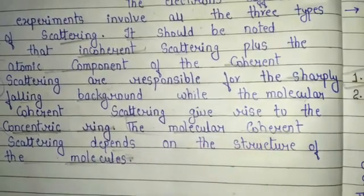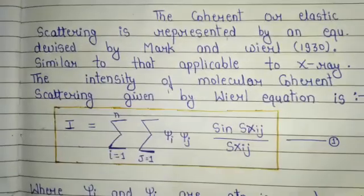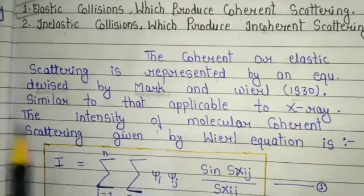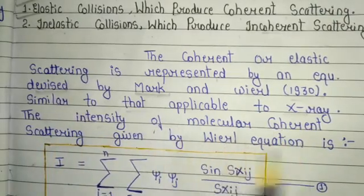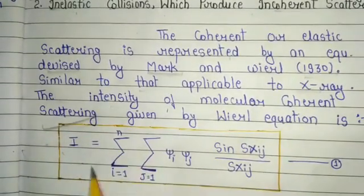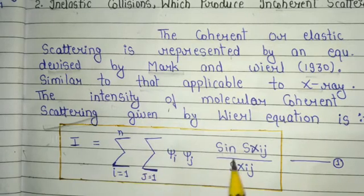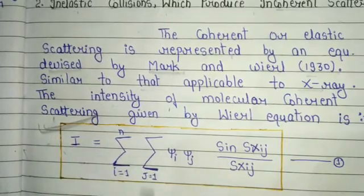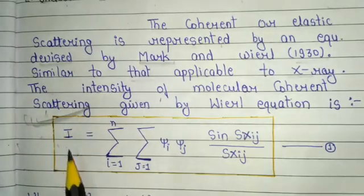Now the important part of the video is the Virial equation. The coherent or elastic scattering is represented by an equation devised by Mark and Virial in 1930, similar to that applicable to X-rays. The intensity of the molecular coherent scattering given by the Virial equation is: I = Σᵢ Σⱼ ψᵢ ψⱼ · sin(s·xᵢⱼ) / (s·xᵢⱼ). This is equation 1 and is also called the Virial equation.